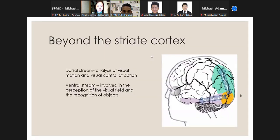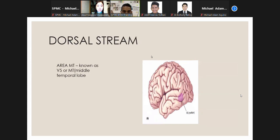The dorsal stream, as we can see in this picture, is involved in analysis of visual motion and visual control of action. The area MT, also known as V5 or middle temporal area—some evidence indicates that specialized processing of object motion takes place here. Neurons in area MT have large receptive fields that respond to stimuli in a narrow range of directions.